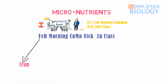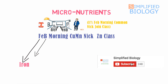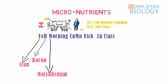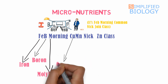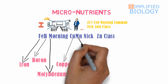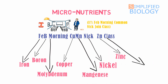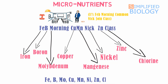Fe of Feb is iron. B of Feb is boron. Mo of morning is molybdenum. Cu of 'come on' is copper. Mn of 'come on' is manganese. Ni of Nick is nickel. Zn of join is zinc. Cl of class is chlorine. So these are the micronutrients.